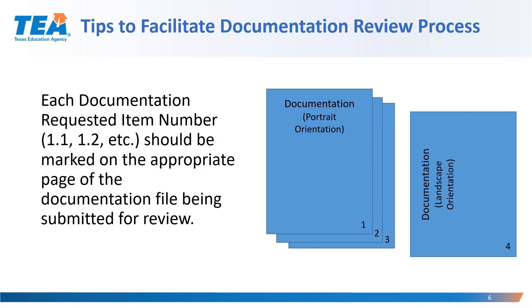Each documentation requested item number should be marked on the appropriate page of the documentation file being submitted for review. For example, in this documentation file, the LEA submitted four pages. On their first page, they have documentation referencing item 1.1 and documentation referencing item 1.2. So the LEA would want to make sure that they mark where 1.1 documentation is and where 1.2 documentation is.